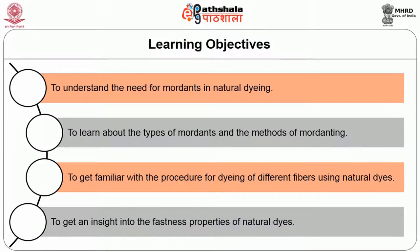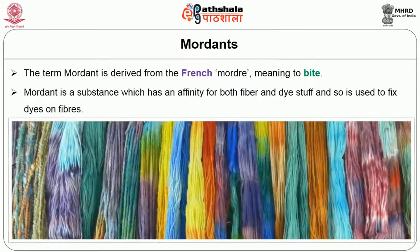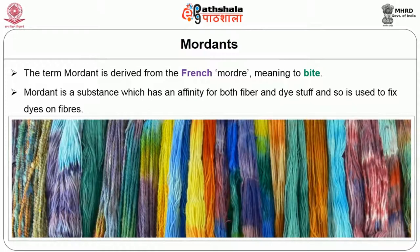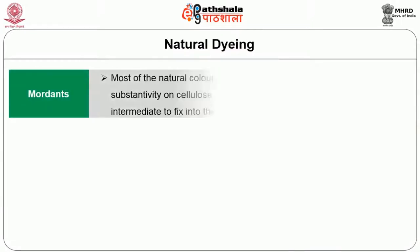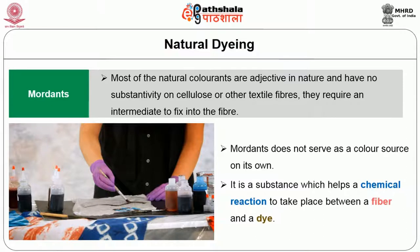What are mordants? Why are they necessary in natural dyeing? The term mordant is derived from the French mordre, meaning to bite. A mordant is a substance which has an affinity for both fibre and dye stuff and is used to fix dyes on fibres. Most natural colourants are adjective in nature and have no substantivity on cellulose or other textile fibres. They require an intermediate to fix into the fibre, called a mordant. Mordant does not serve as a colour source on its own; it is a substance which helps a chemical reaction to take place between a fibre and dye.